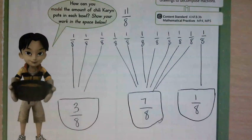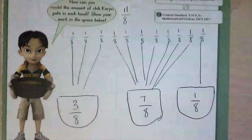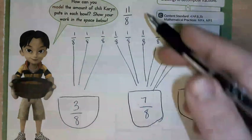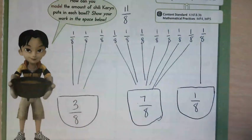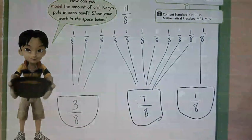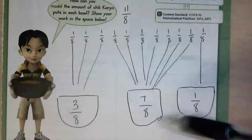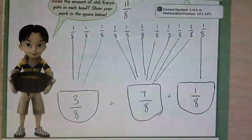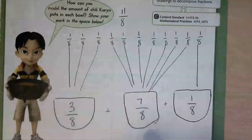They told us at the start they did not have to be the same. But does 3 plus 7 plus 1 equal 11? Well, 3 plus 7 is 10, plus 1 more is 11. So this is 11/8 — we put it into these bowls. This is how we can decompose 11/8: we break it into smaller pieces, and if we add those three numbers together it still equals that original one. Let's turn to page 338.